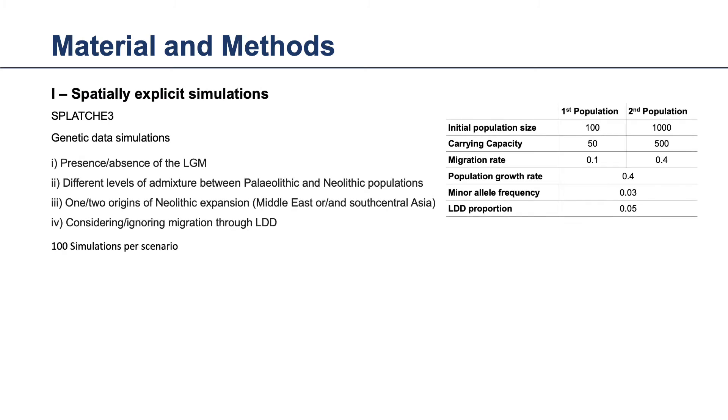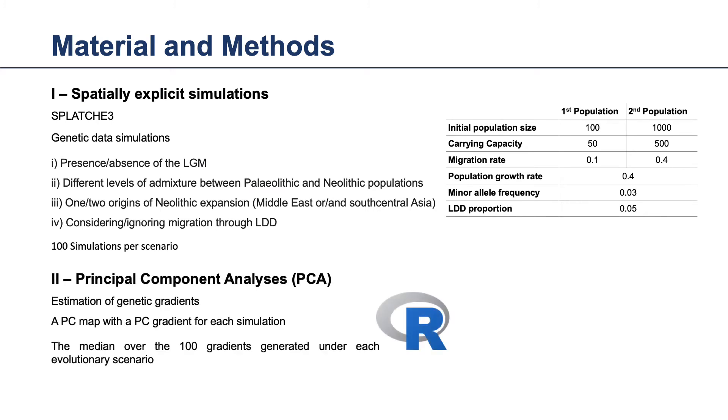So we used spatially explicit simulations to simulate genetic data under a variety of scenarios. Then, we applied principal component analysis to estimate the genetic gradient from the simulated scenarios.